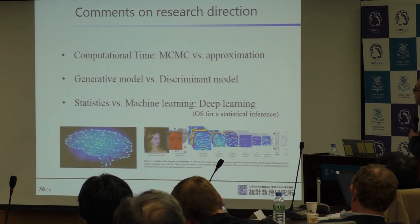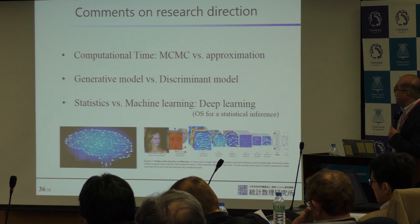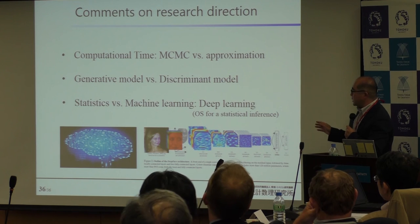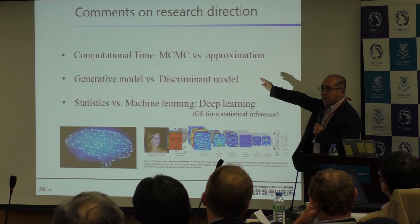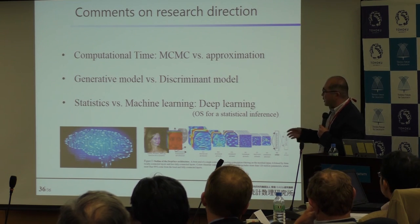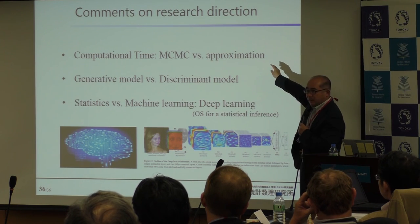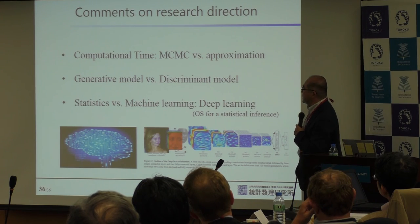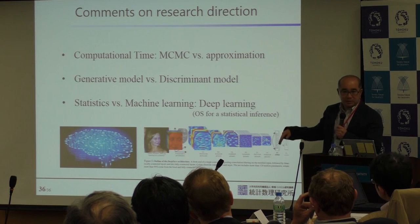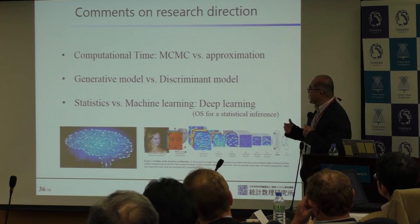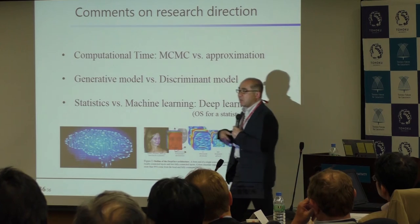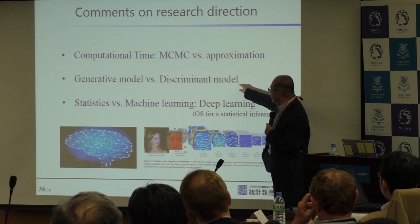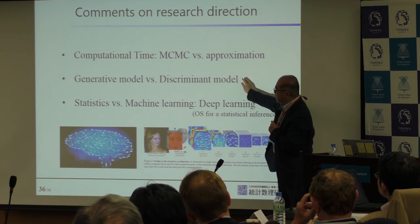Let me close by discussing research directions. MCMC is very promising for estimating Bayesian models, but the computation time is very high. So in cooperating with big data, we need some approximation technique. The next point is that machine learning people are interested in discriminative models. We are statisticians, and statisticians first try to make a generative model before moving to a discriminative model. But sometimes the final objective should be given straightforwardly by a discriminative model, so we have to consider this problem.